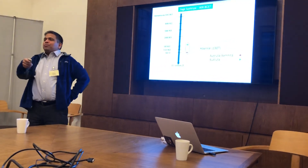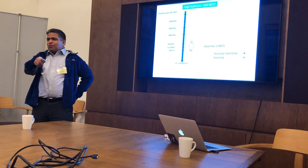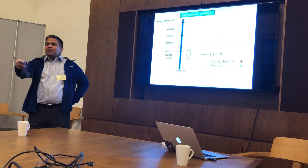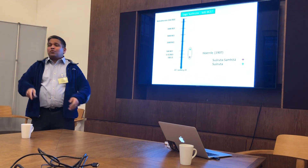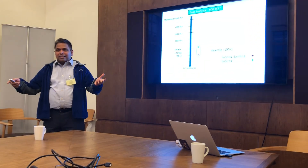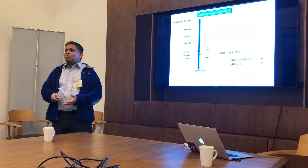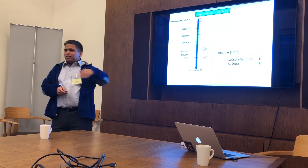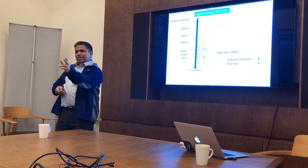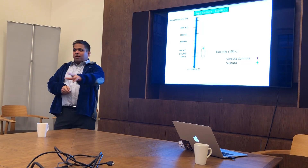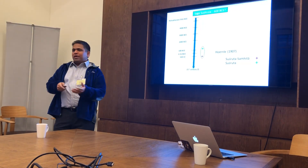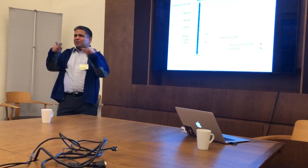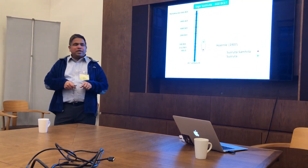The question is how did he arrive at the timing of Shatapatha Brahmana as 500 BCE? He simply took whatever date was popular at that time — Shatapatha Brahmana was thought to be around 500 BCE. If we get into Q&A, I'll walk you through the whole logic and be happy to show the lack of logic there and the many confusing assumptions that he made.